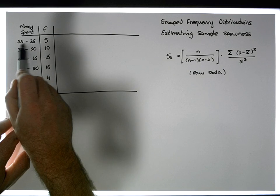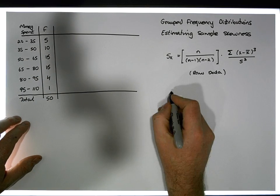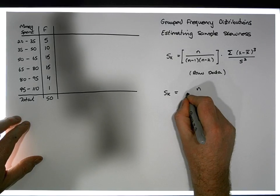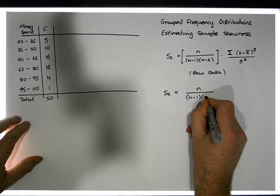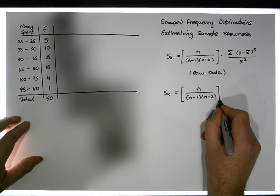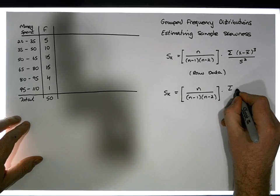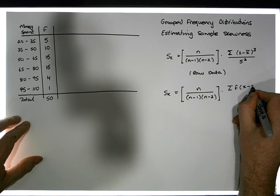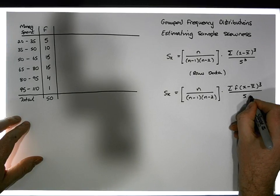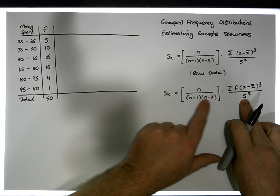The modification accounts for the fact that when we calculate the distance between an observation and the mean, there are f such distances in each interval. The modified sample skewness formula is: Sk = n / ((n−1)(n−2)) × the sum of f·(x − x̄)³ divided by s³.